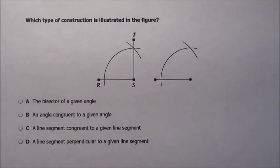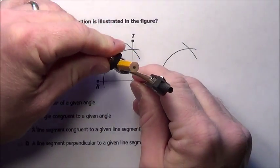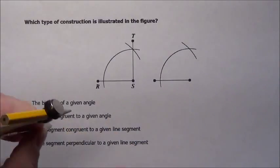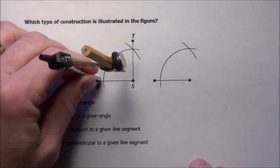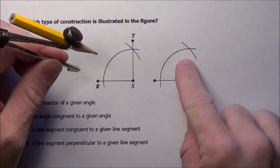Well, let's figure it. What they obviously did is they put this right here on S and they made a marking, and then they came over and they put it right here on R and then made a marking, and then they tried to do that here too.